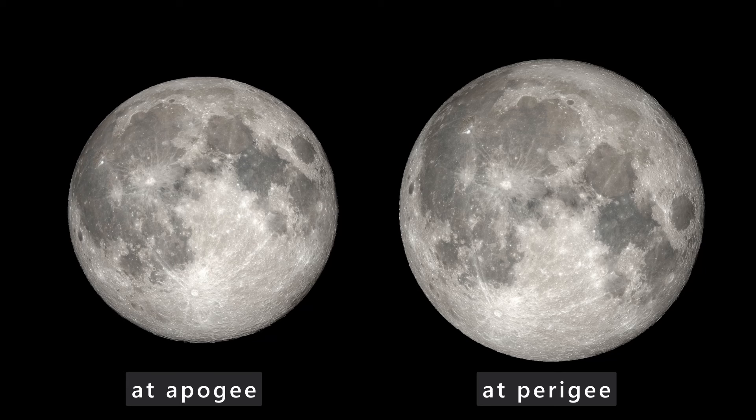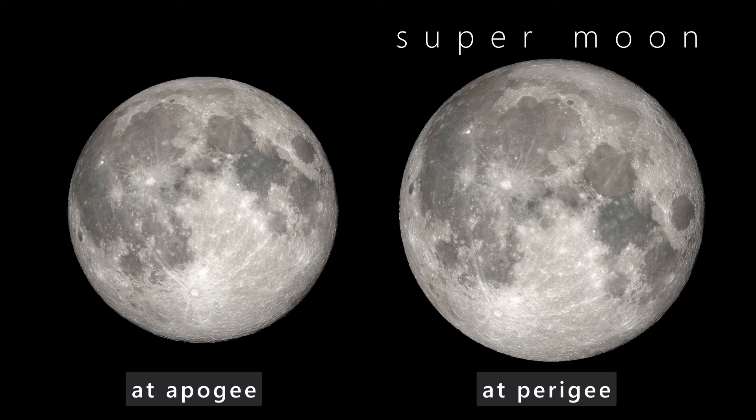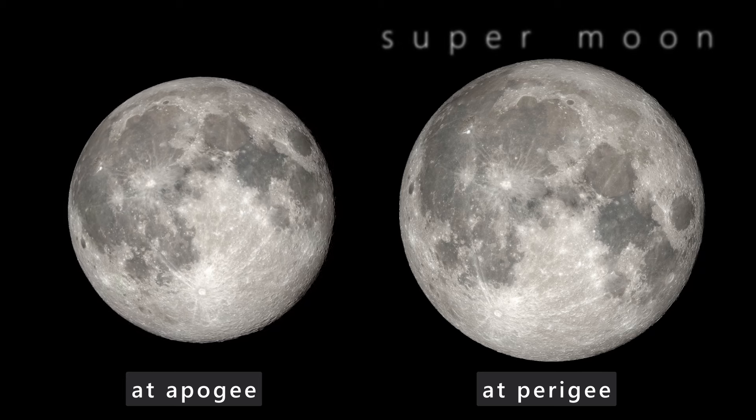Sometimes the Moon is farther from Earth, with the farthest distance being 253,000 miles, referred to as the apogee. And sometimes the Moon is closer to Earth, with its closest distance being 226,000 miles away, referred to as the perigee. The variance between its closest and farthest points is around 12%, which translates to a 25% larger Moon in our sky between its closest and farthest distances. Oftentimes in the media you'll hear of supermoons, which occur when the full Moon is closest to Earth, or at its perigee.